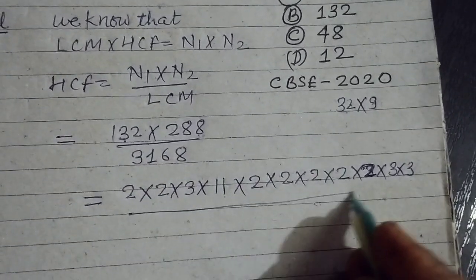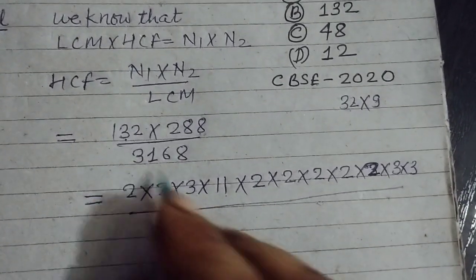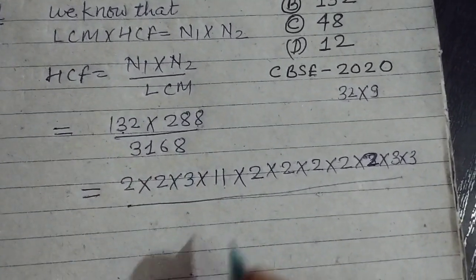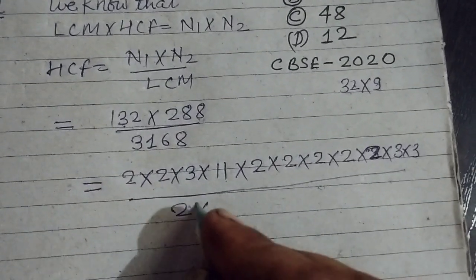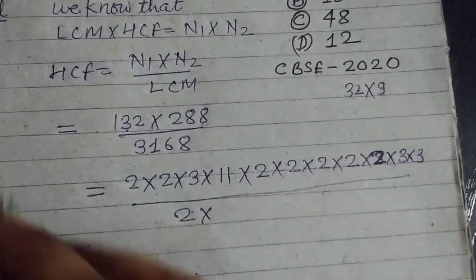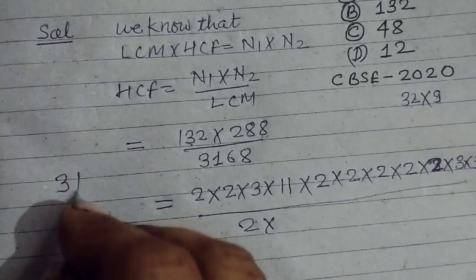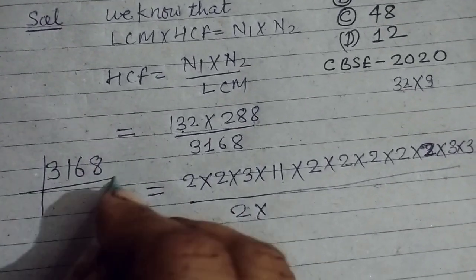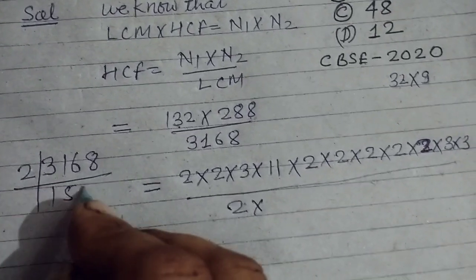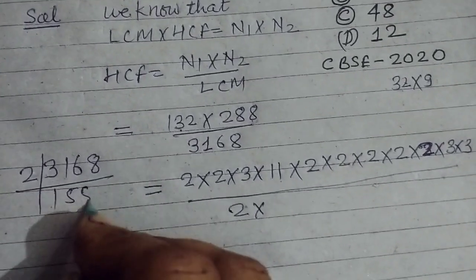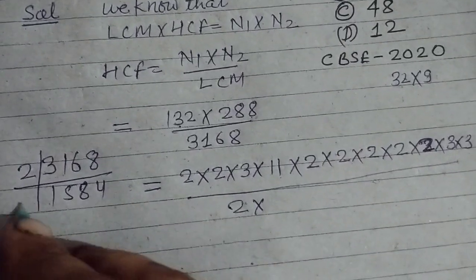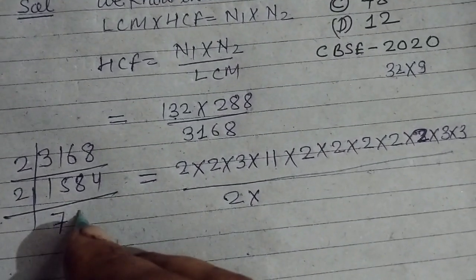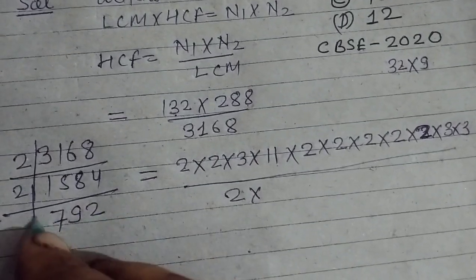Now 3168 has factors as 2 times 2... We factorize 3168 by dividing by 2 repeatedly. First division gives 1584, then 792, continuing the process.